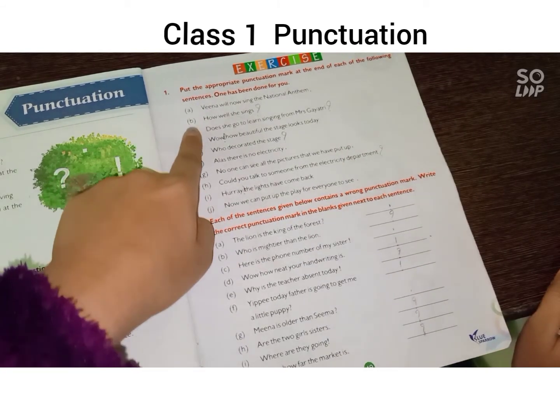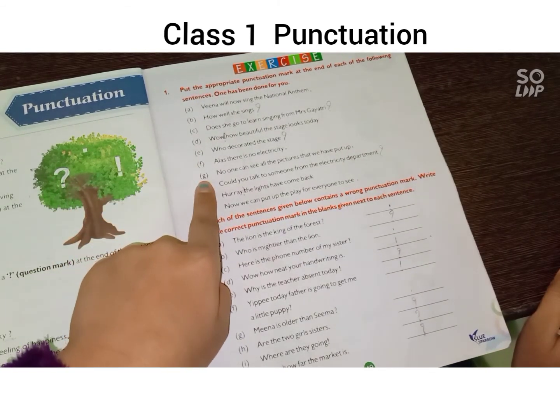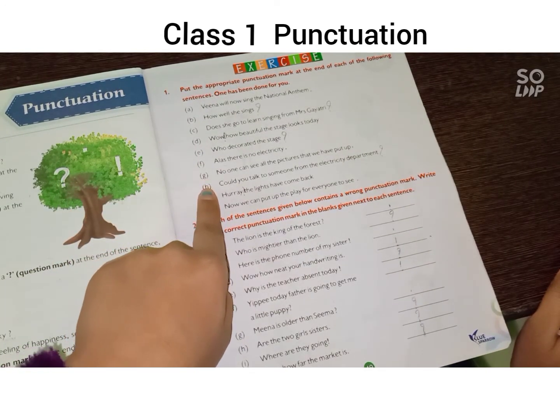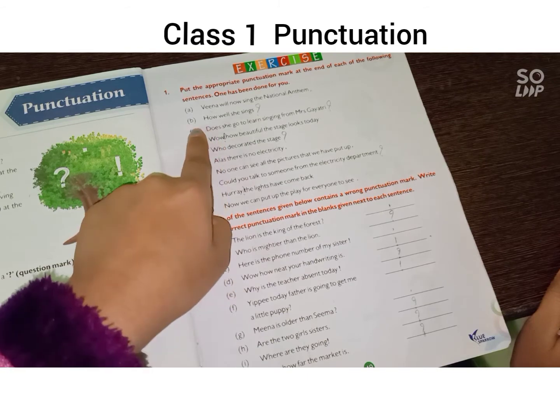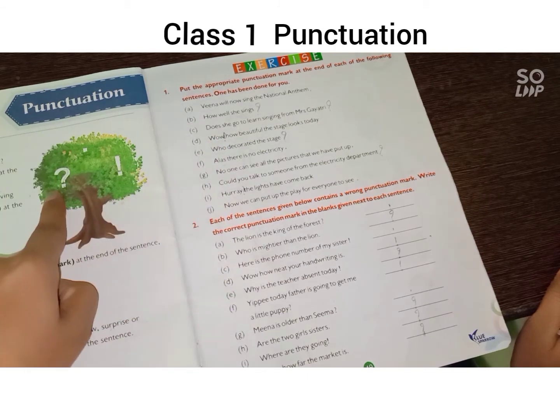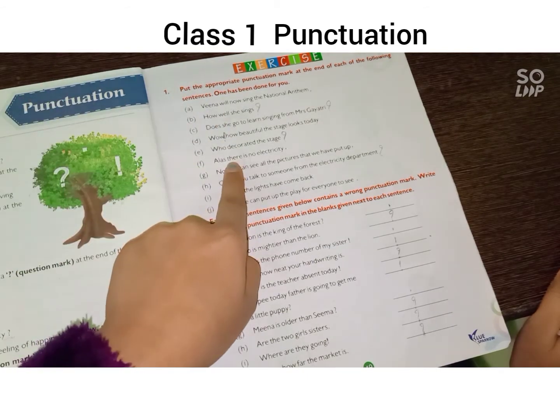We have 3 marks: the question mark, full stop, and exclamation mark. Tino mark ki alag alag lines di hoi hai, aur unmei koon sa mark koon sa jaghe pe aayega hume karna hai.